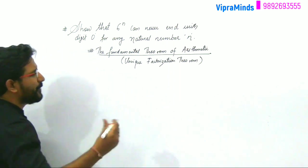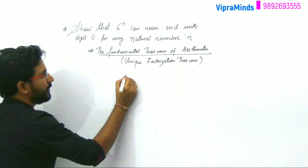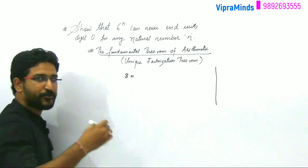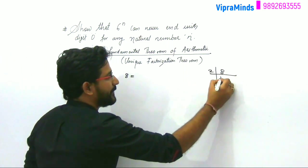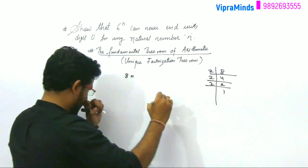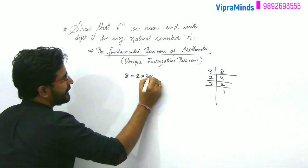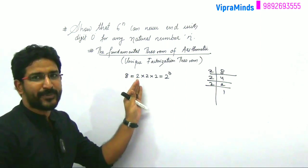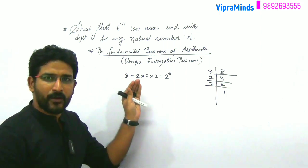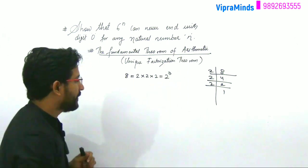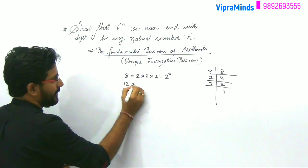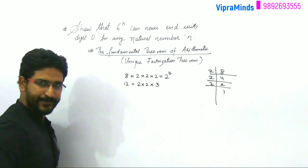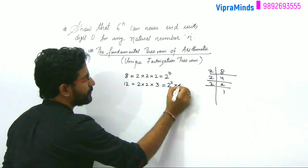Now if you have a composite number, for example 8, you take out its factors: 8 is 2 into 2 into 2, that is 2 into 4, 2 into 2 and 2 into 1. And for 12, it will be 2 into 2 into 2 into 3, so 2 into 2 into 3, that is 2 squared into 3.